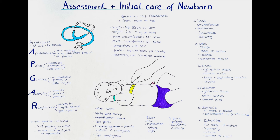Next is the inspection of the extremities. This is important as fractures to the clavicle or dislocation of joints may occur during birth. We assess for full range of motion, symmetry, and signs of trauma, and check muscle tone. Hyper-flexibility of the joints can be a sign of syndromes such as Down syndrome. It's also important to count the digits — a fusion of fingers or toes called syndactyly, or more than five digits called polydactyly, may sometimes be present.